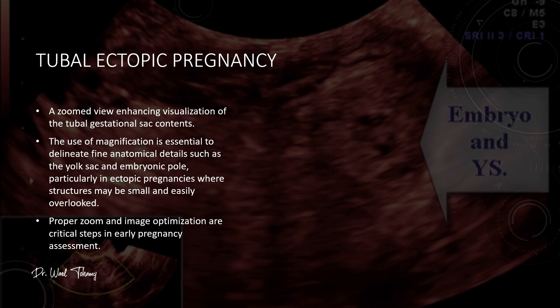Here is a zoomed-in view of the tubal gestational sac. By using magnification, we can clearly make out the finer details like the yolk sac and the tiny embryonic pole. In ectopic pregnancy, these structures can be very small and easy to miss, so proper zoom and meticulous image optimization are absolutely essential. Always take the time to magnify a suspicious area — here it can be the difference between spotting an ectopic early and missing it altogether.